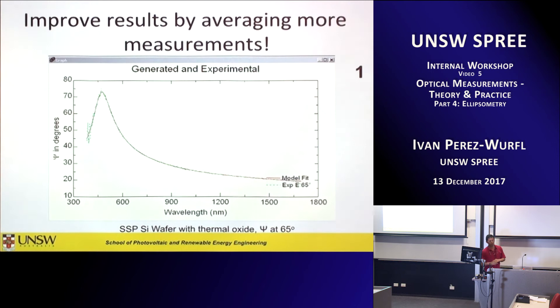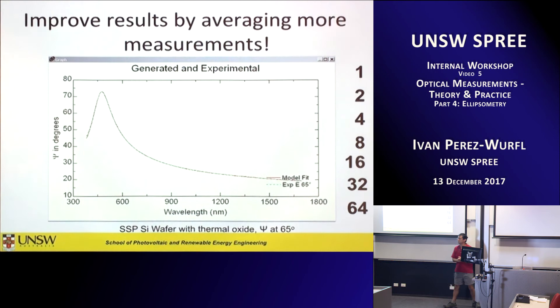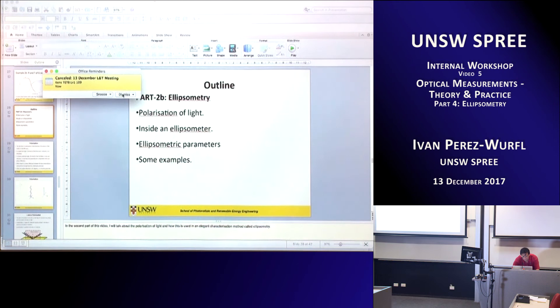One thing that is easy to demonstrate compared to R and T is how much better measurements get as you average more. On the ellipsometer, it takes about a fraction of a second to do one measurement, so you can very quickly see how clean your measurements become going from 1 to 64 averages. I'm not going to have time to show you everything you could do with WBase and ellipsometry, except to show you that the models Ned talked about are naturally available there.